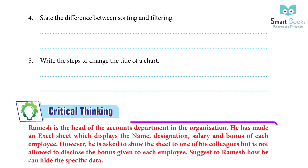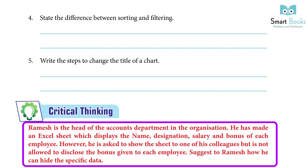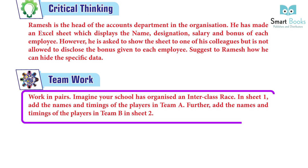Critical Thinking: Ramesh is the head of the accounts department in the organization. He has made an Excel sheet which displays the name, designation, salary, and bonus of each employee. However, he is asked to show the sheet to a colleague but is not allowed to disclose the bonus given to each employee. Suggest how he can hide the specific data. Answer: Ask students to do it by themselves. Team Work — Work in pairs: Imagine your school has organized an inter-class race. In Sheet 1, add the name and timings of the players in Team A. In Sheet 2, add the names and timings of the players in Team B. Answer: Ask students to do it by themselves.